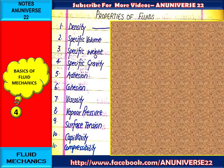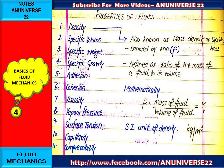Firstly, what is density? Density is also known as mass density or specific mass. It is denoted by rho. Density is defined as the ratio of mass of a fluid to its volume. Mathematically, it can be written as rho equal to mass of fluid upon volume of fluid.